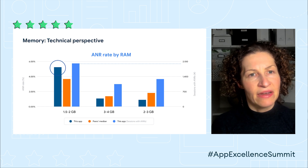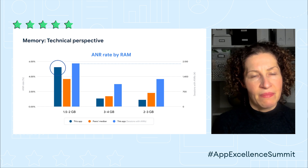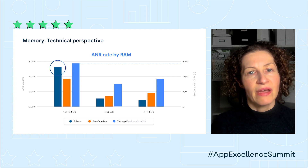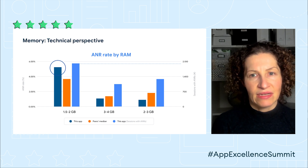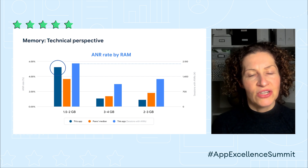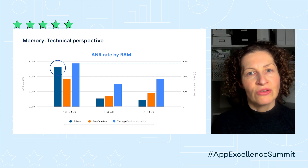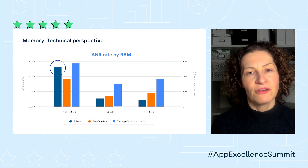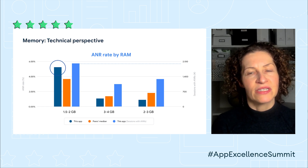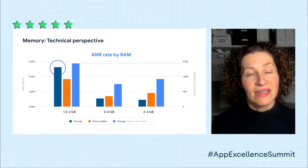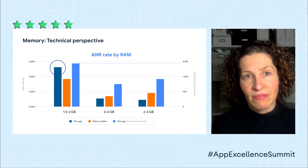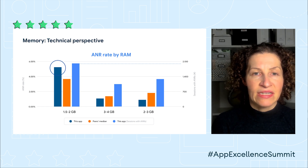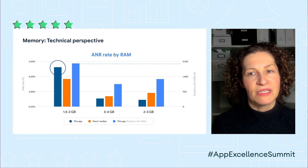Having done this, I can now see that my ANR rate on low RAM looks quite a bit higher than my peers. There's also a third light blue bar on the chart connected to the right-hand axis. This indicates the number of sessions with ANRs on this RAM bucket, so it takes into account not only my app's ANR rate, but also the number of users I have. I can see that the absolute number of ANRs in this 1.5 to 2GB RAM segment is pretty high, meaning that this is contributing a lot to my app's overall ANR rate. Taken together, it seems like this ANR rate is concerning from a technical perspective.